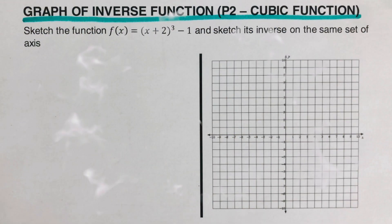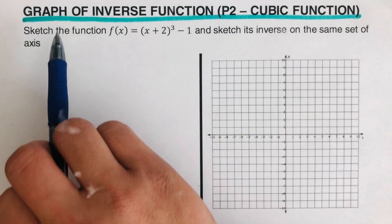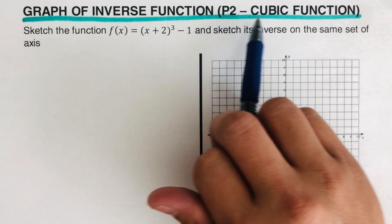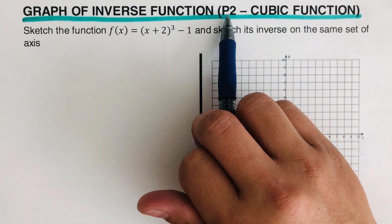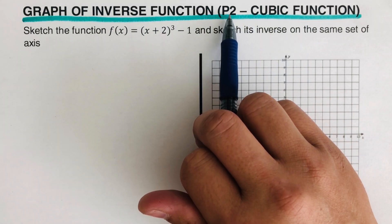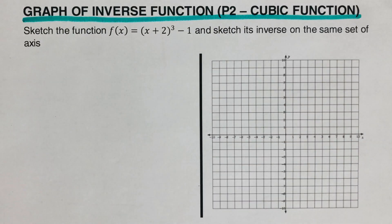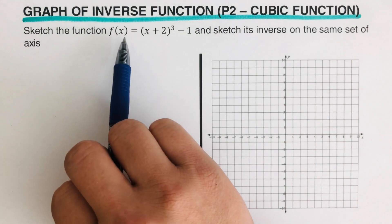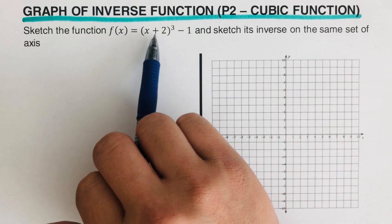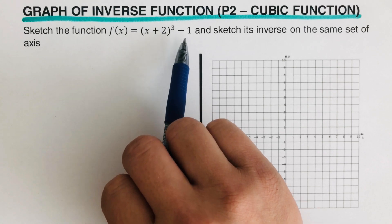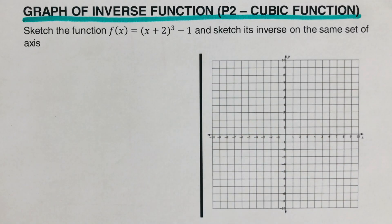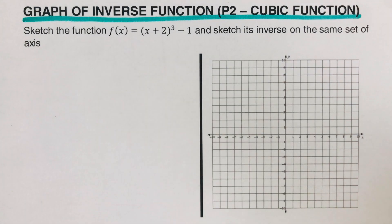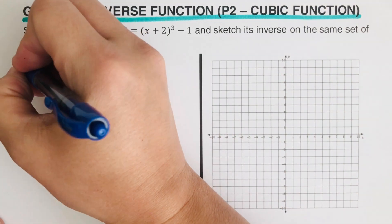Hello everyone. In this video we are going to sketch the graph of the inverse function of a cubic function. This is the second part — I will put the link of the first part in the description box below. Let's take this example: sketch the function f(x) = (x+2)³ - 1 and sketch its inverse on the same set of axes. There are some steps we need to follow in order to sketch the inverse of any function.